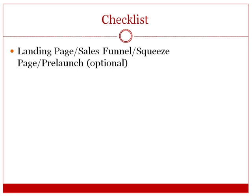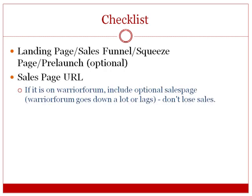You're going to need some sort of landing page, which is optional. You don't have to have a sales funnel, squeeze page, or pre-launch page, but it is an option. If you leave that blank, it'll default to the sales page URL. If your sales page is on the WarriorForum as a Warrior Special Offer, the forum tends to go down or lag, and if your sales page lags you'll lose sales. In that case, you can also include an optional sales page — a really useful feature.